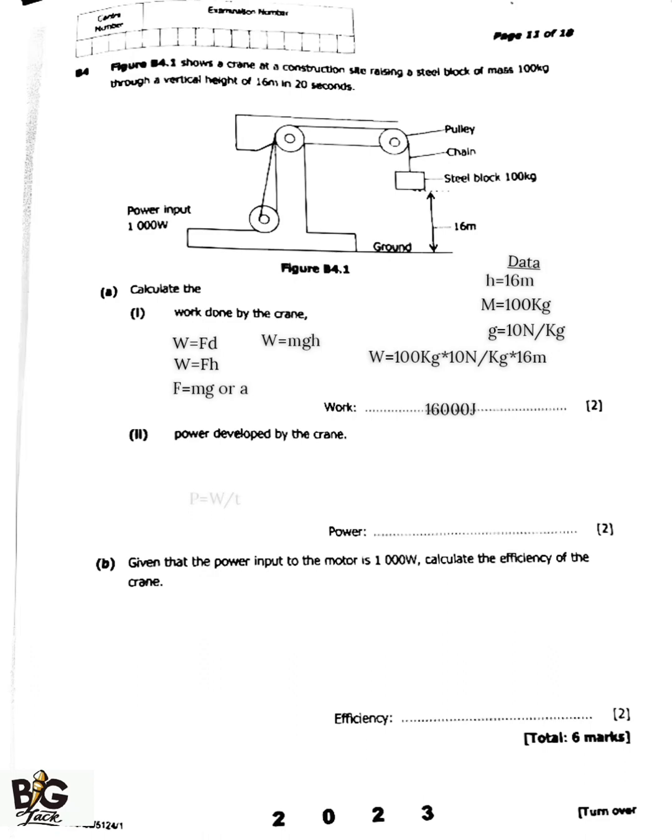We have already found the work done here, so 16,000 joules divided by the time in seconds. Then my answer is going to be 800 watts. This 800 watts would be my power output. As I was saying, power input is greater than power output.